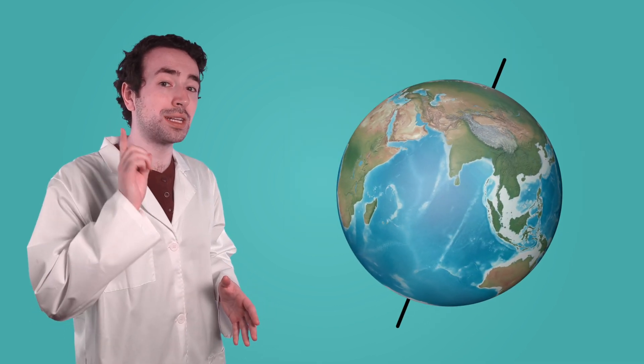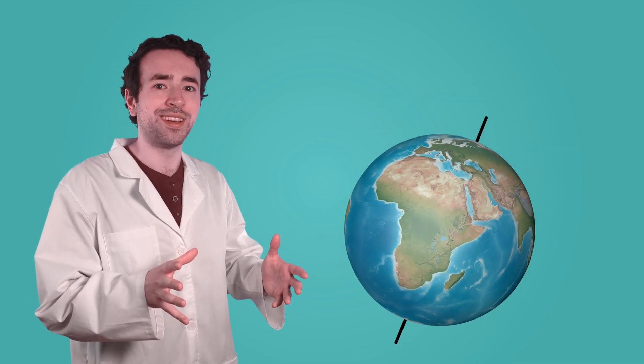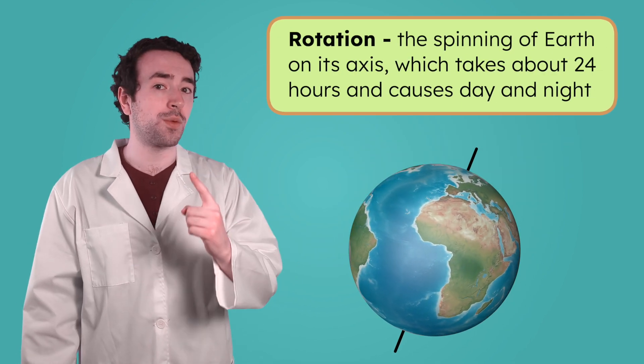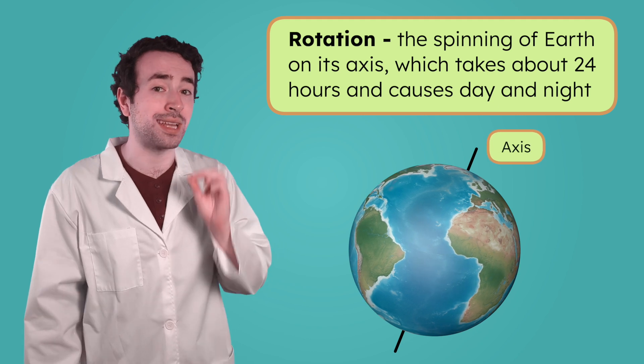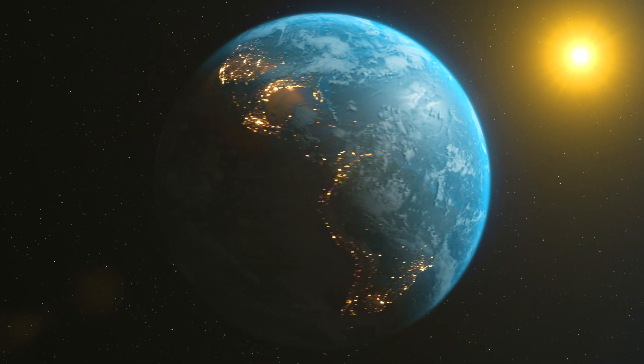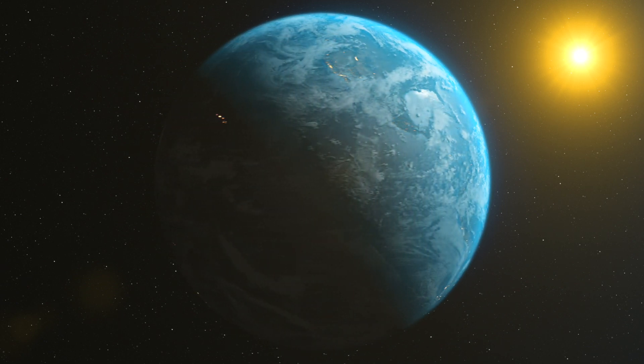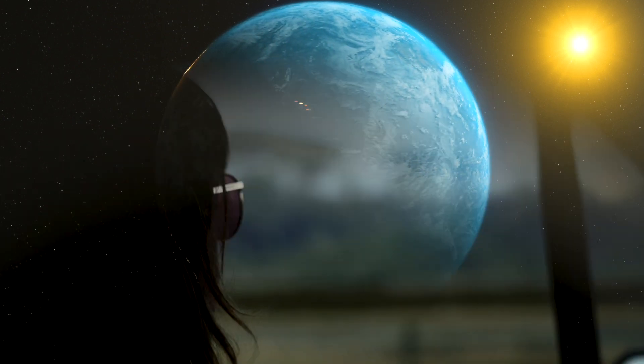The Earth must be the one moving. Our planet is rotating — spinning, or turning around, an invisible line called an axis. As the Earth rotates, different parts of the world face the sun while others turn away. This makes it look like the sun is moving across the sky, when really we're the ones moving. Think about riding in a car. When you look out the window, it seems like the trees and buildings are moving past you. But really, you're the one moving inside the car. The same thing happens with Earth and the sun.